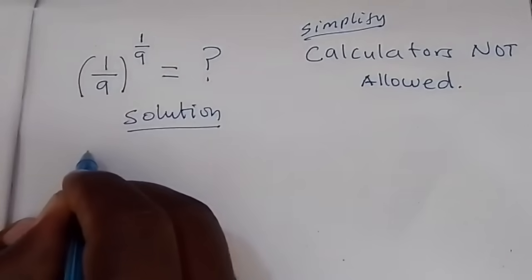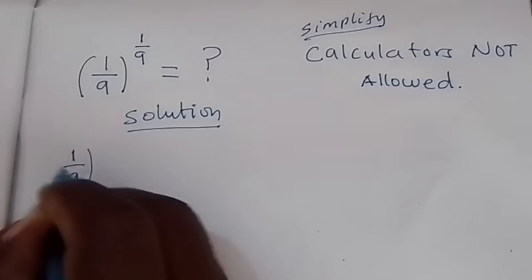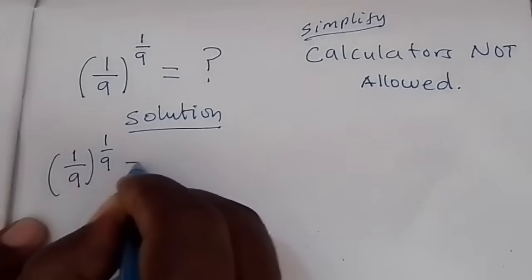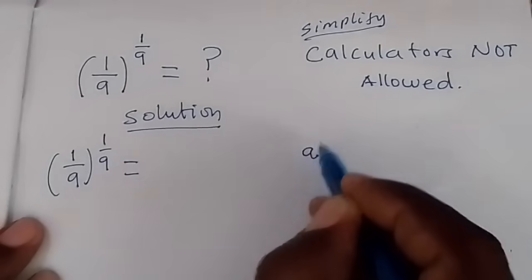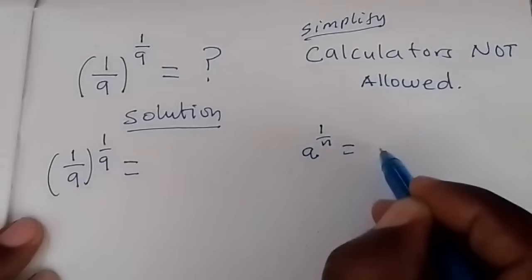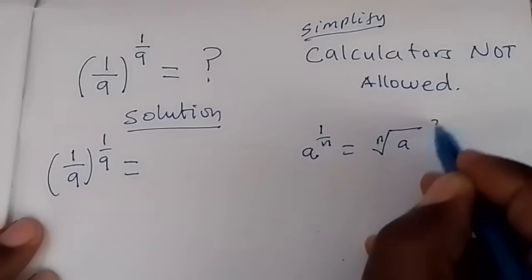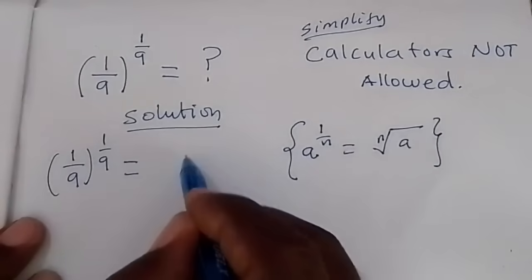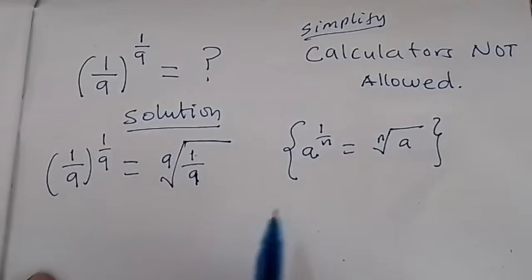We have been given the expression 1 over 9, the whole of this raised to 1 over 9. By the application of the rule that a raised to 1 over n is the same as the nth root of a, this changes to the 9th root of 1 over 9.